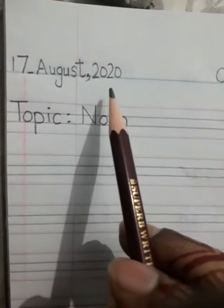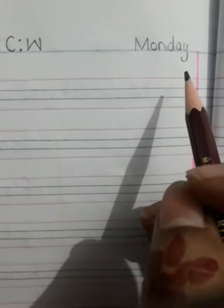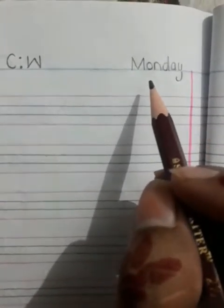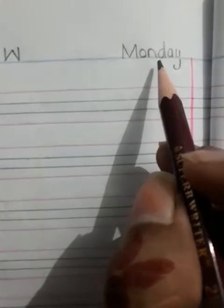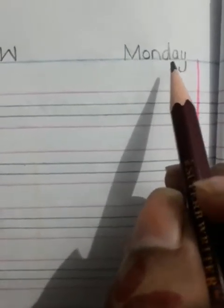Good morning students, Assalamu Alaikum. Today we have the English topic with us. The date is 17th August 2020, and the day is Monday. Repeat the spellings with me: M-O-N-D-A-Y, Monday. In the middle of the page we have to write C.W., which stands for Class Work. You have to put double dots between.